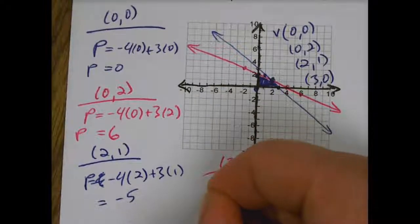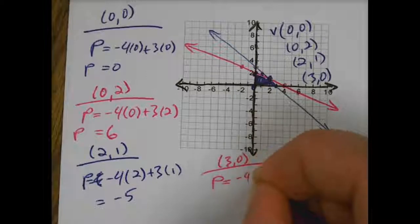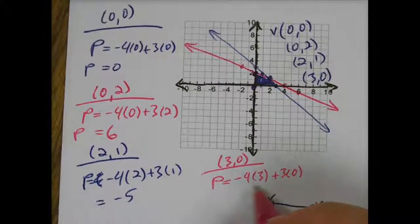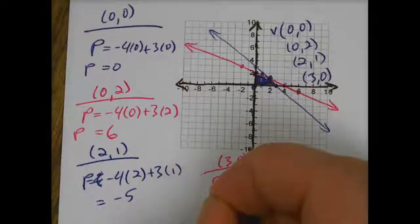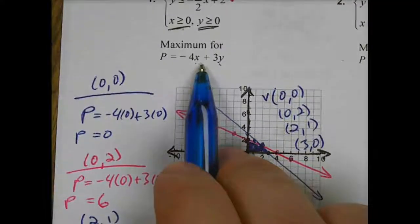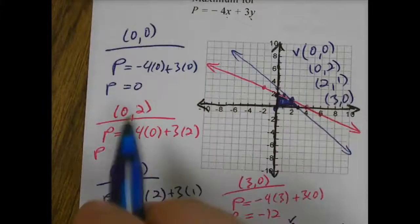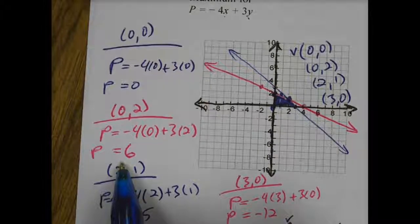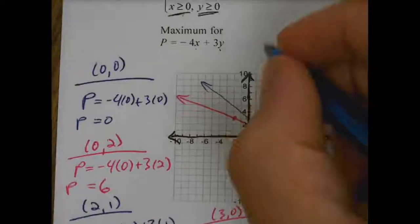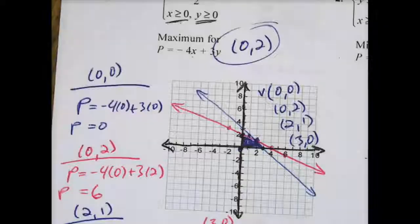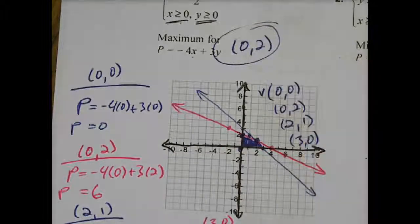So to make sure if I'm finding my maximum, find the maximum P value for this, the maximum objective function value. So I would have negative 4 times 3 plus 3 times 0. Negative 4 times 3 is negative 12, plus 0 is negative 12. So for this function, my maximum, the way I list this, it says maximum for P equals negative 4x plus 3y. My maximum value came at the point 0, 2. My vertices 0, 2, when my P value was 6. That is the highest possible value I could get. Therefore, my maximum would be at 0, 2. That would be the solution to this function, of this whole thing, this linear program.